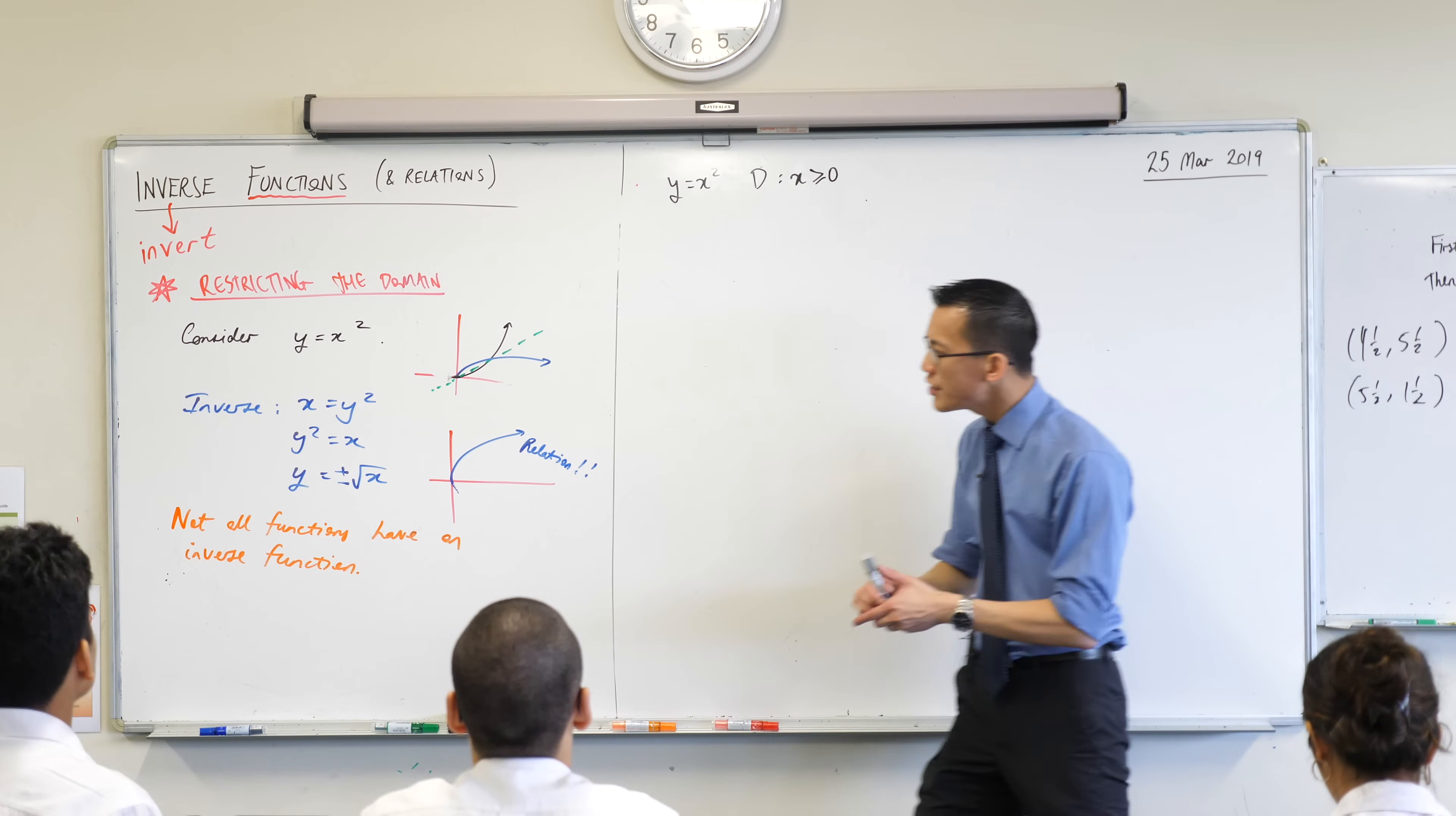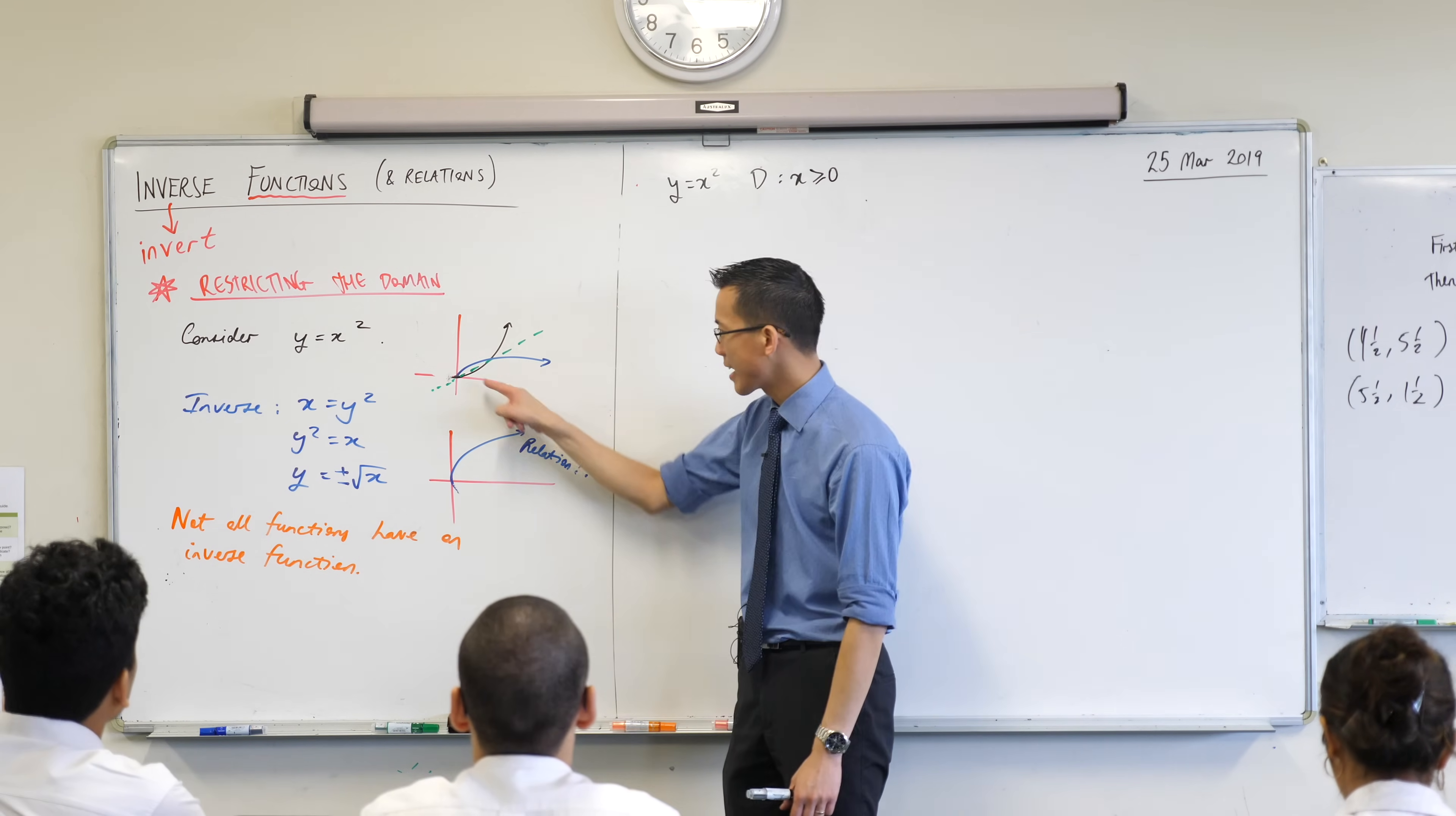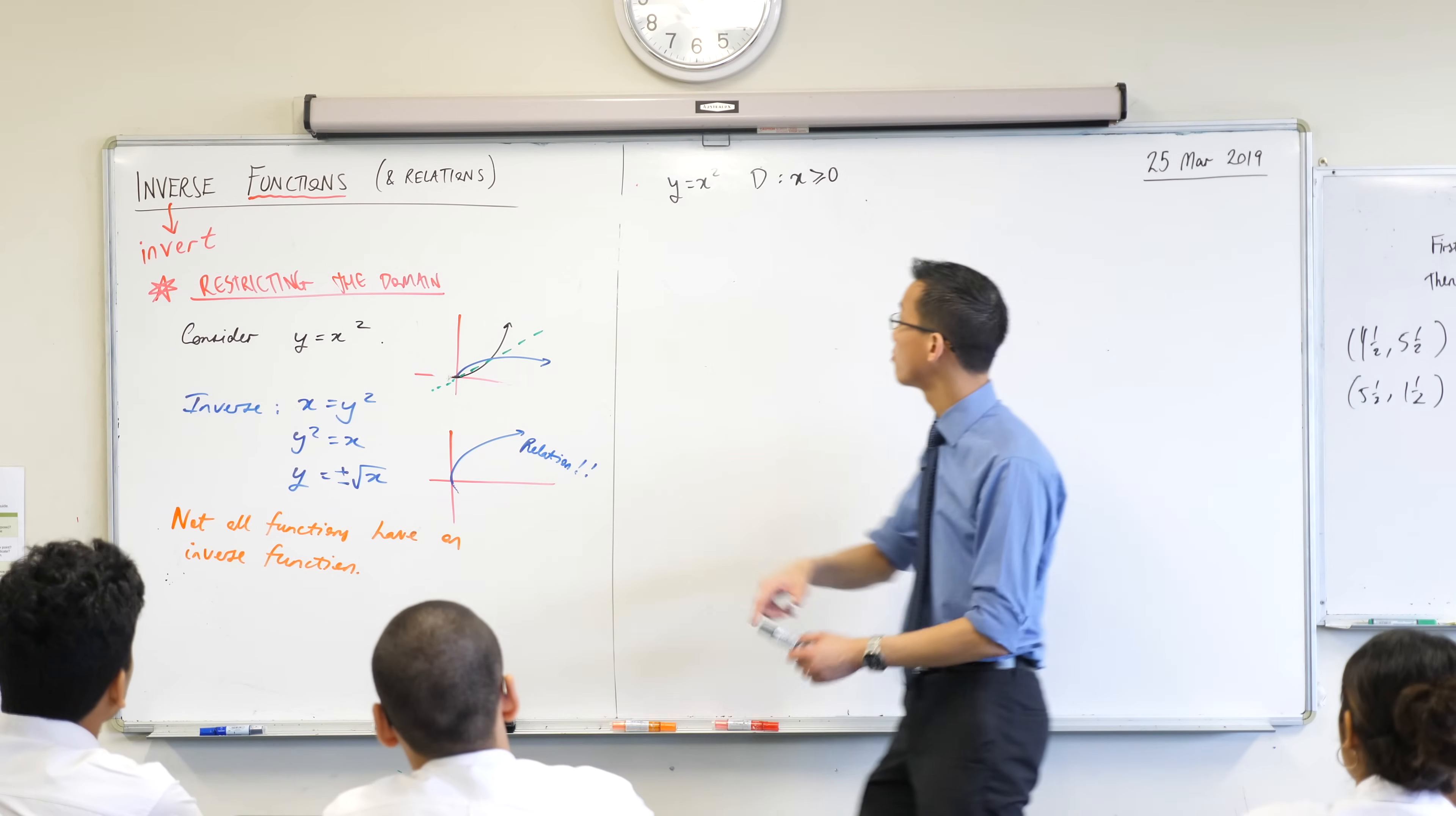Because remember, what I don't want to have is any double-ups. But at x equals zero, you don't have a double-up. It's just right there at one spot.